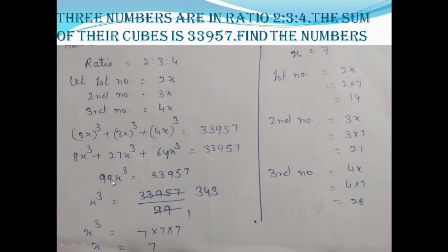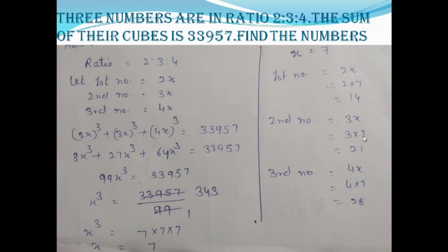Since 99 is multiplied with x³, divide 33,957 by 99 to get 343. The prime factors of 343 are 7 × 7 × 7. Finding the cube root gives x = 7. So the first number is 2 × 7 = 14, the second is 3 × 7 = 21, and the third is 4 × 7 = 28. The required numbers are 14, 21, and 28.